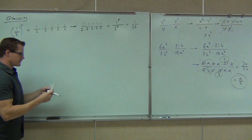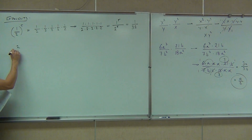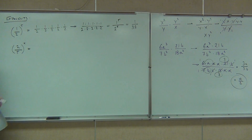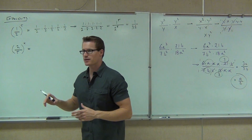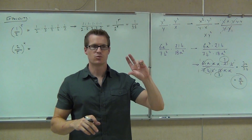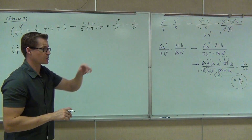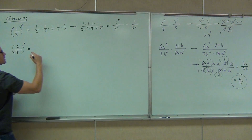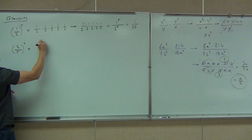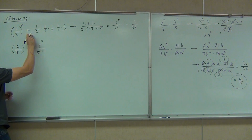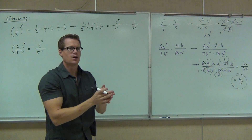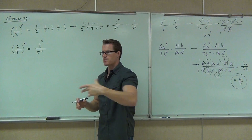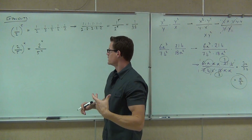All I need you to know is that if you're trying to do an exponent like two-fifths to the fourth, what you need to understand is that taking a fraction to an exponent means taking the numerator to the exponent over the denominator to the exponent. Just show me that you know to do two to the fourth over five to the fourth — because we're just multiplying that fraction over and over again, so all the numerators are multiplied that many times and all the denominators will be multiplied that many times.